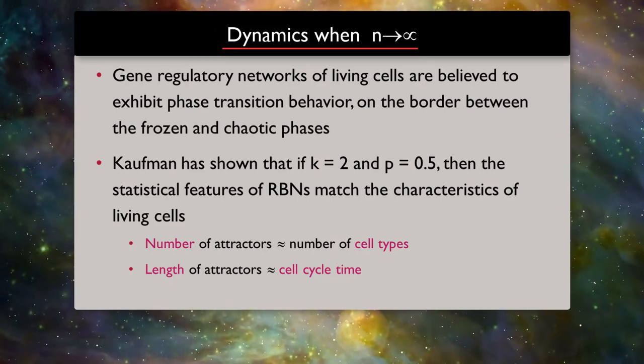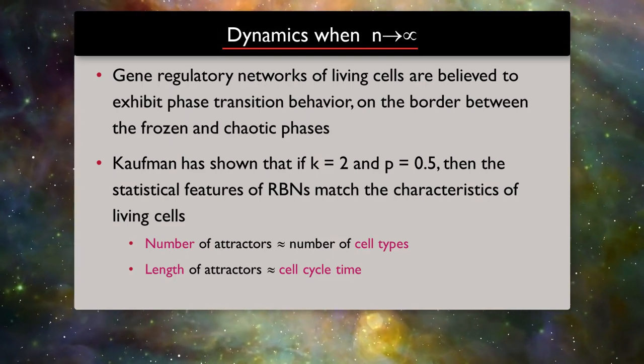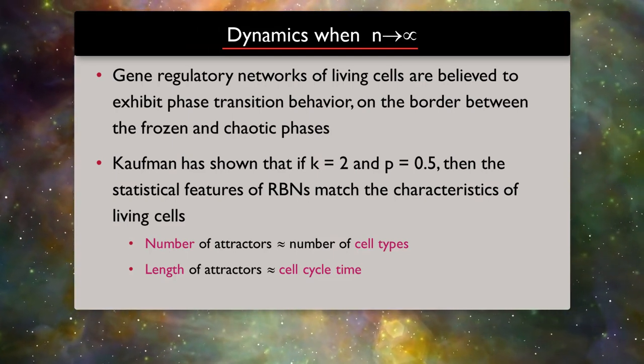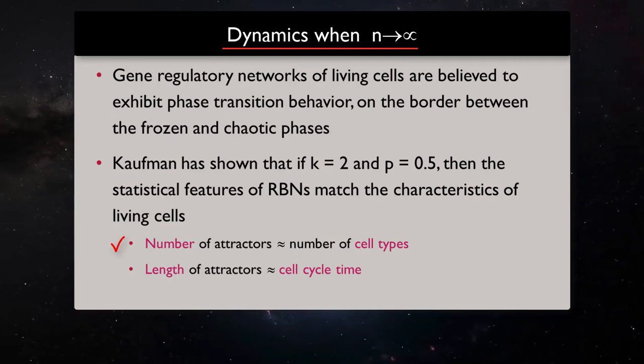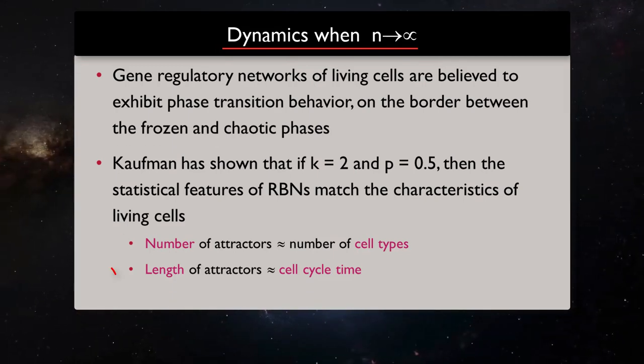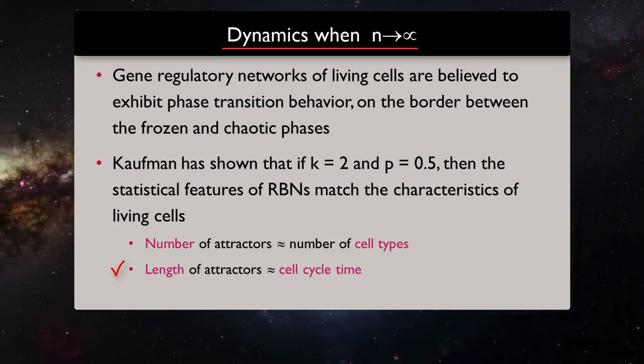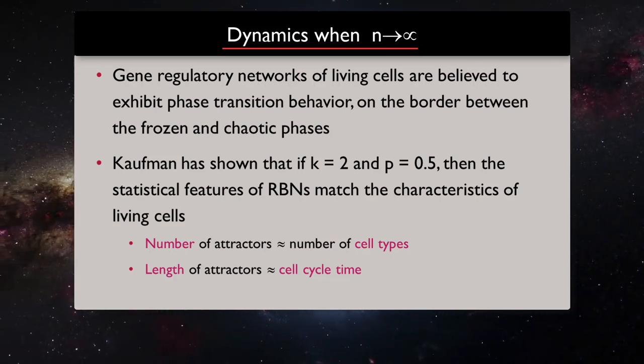then the statistical features of random boolean networks match the characteristics of living cells, where number of attractors represent number of cell types and the length of attractors represent cell cycle time approximately.